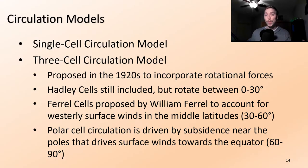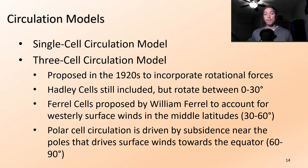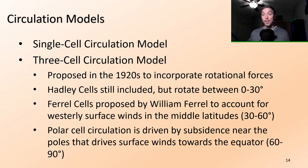The model we actually use is the three-cell circulation model, proposed in the 1920s to incorporate our better understanding of rotational forces from Earth's spin. The Hadley cells are still included, but now they only pertain to the space between 0 and 30 degrees. The Ferrell cells, proposed by William Ferrell, account for the westerly surface winds in the mid-latitudes between 30 and 60 degrees. The polar cell is driven by subsidence near the poles, spanning from 60 to 90 degrees north and south latitude.